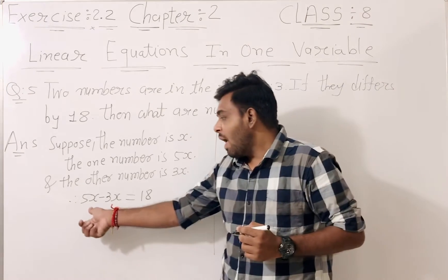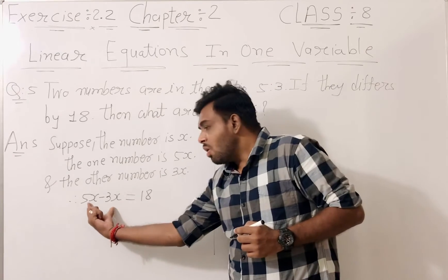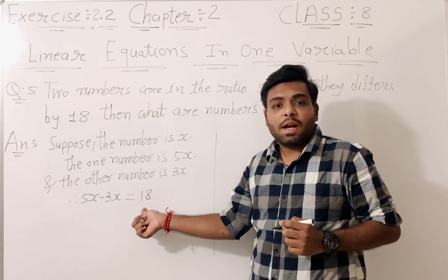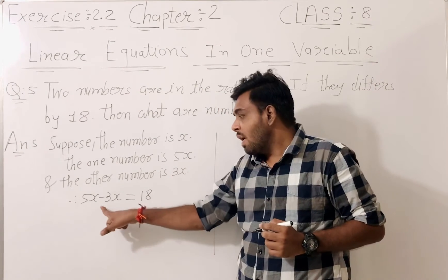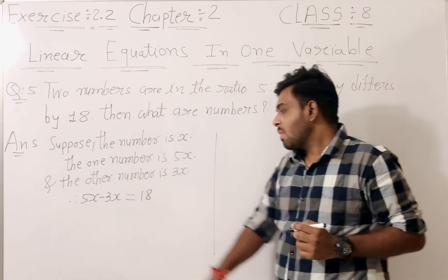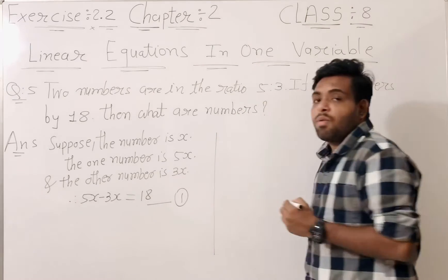Then why? Because they differ by 18. These two numbers are differed by 18. That's why here minus sign. And here is equation number 1.